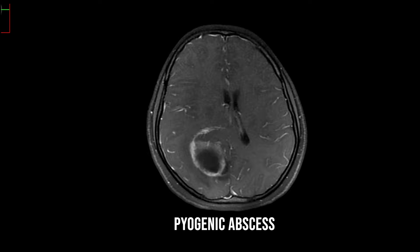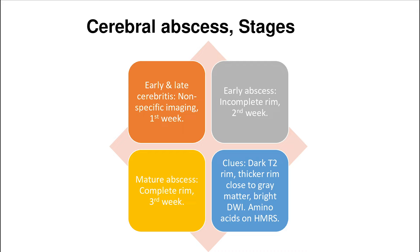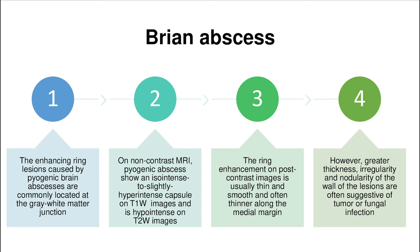There is uniform homogeneous diffusion restriction and a thin smooth rim of enhancement, which is classical for pyogenic abscesses — so this is a case of pyogenic abscess. In cerebral abscess, early and late cerebritis show no specific imaging features. Early abscess shows an incomplete rim appreciated in the second week. Mature abscess in the third week shows complete rim enhancement. Pyogenic abscesses are commonly located at the gray-white matter junction. On non-contrast MRI, the capsule is iso- to slightly hyperintense on T1 and hypointense on T2, with thin smooth ring enhancement often thinner along the medial margin. Greater thickness, irregularity, or nodularity of the wall suggests fungal infection.